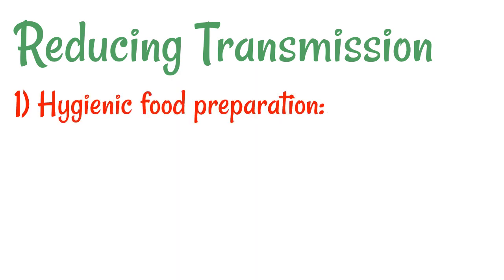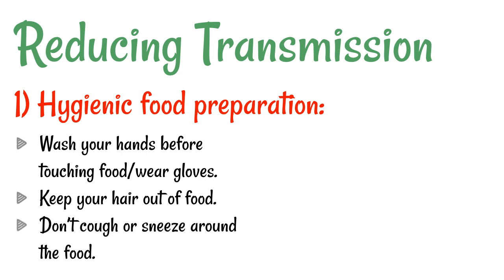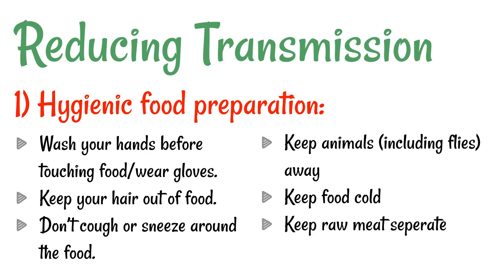There are a lot of different ways to reduce the transmission of disease. The first and most obvious one is hygienic food preparation. Wash your hands before touching food, or wear gloves if working in the food industry. Keep your hair out of the food, don't cough or sneeze around it, keep animals away — including flies, which are really good at spreading disease — and keep food cold, because cold conditions are not good for bacteria and other microorganisms to grow.